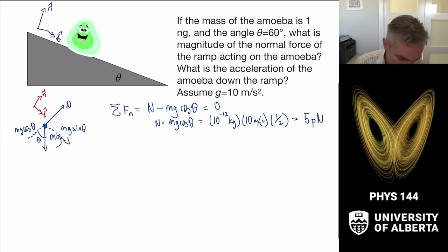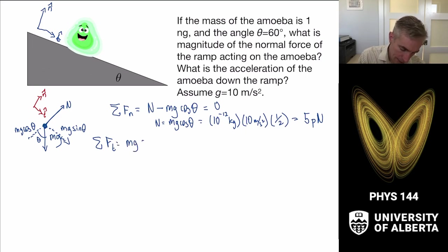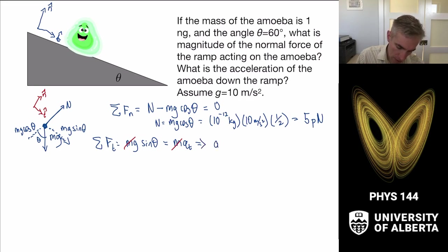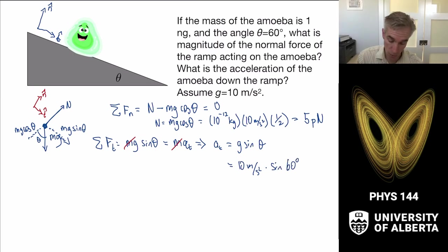Then we want the acceleration down the ramp — that's the sum of forces in the tangent direction. There's only one force: mg sin θ, which equals mass times tangential acceleration. Canceling the masses, the tangential acceleration is g sin θ = 10 meters per second squared times sin(60°) = (√3/2) × 10 ≈ 8.7 meters per second squared.